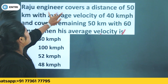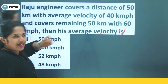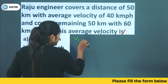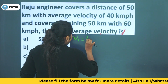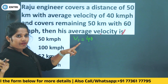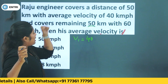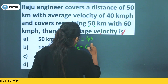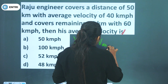Question 1: Raju covers a distance of 50 km at a speed of 40 km per hour, and the remaining 50 km at a speed of 60 km per hour. What is the average velocity for the entire journey? This is a two equal distance case.